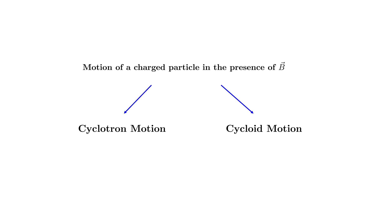We shall now try to understand the motion of a charged particle in the presence of the magnetic field. The first one is known as cyclotron motion and the second one is known as cycloid motion. A cyclotron motion happens when we have only the magnetic field. In the presence of combined electric and magnetic fields, we have what is known as cycloid motion.